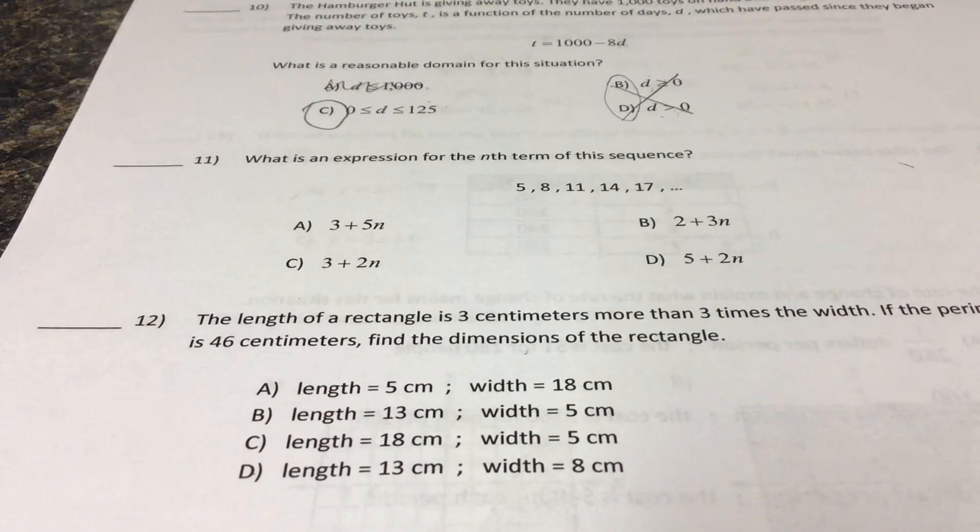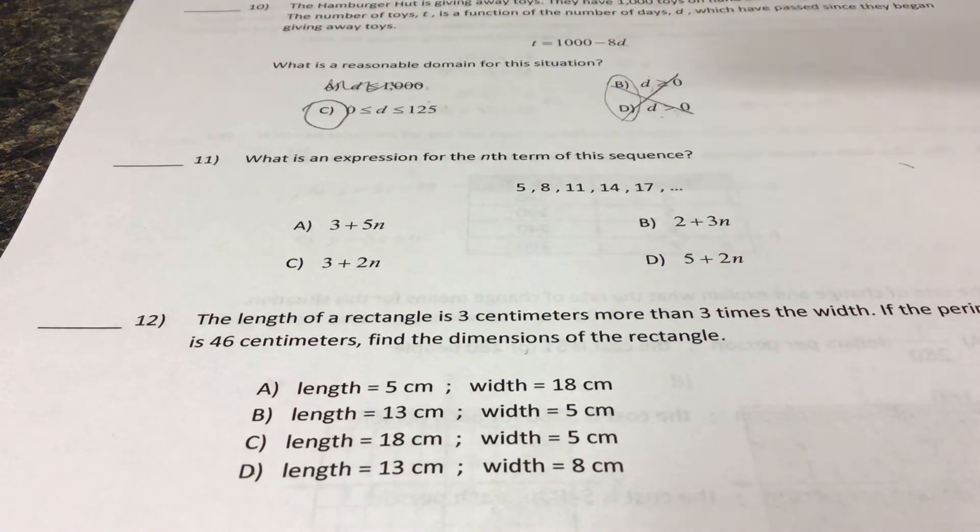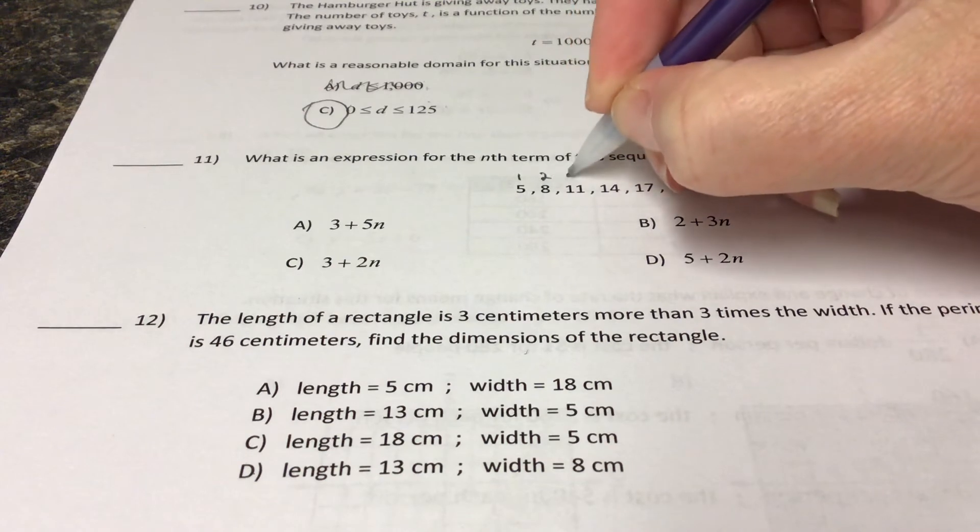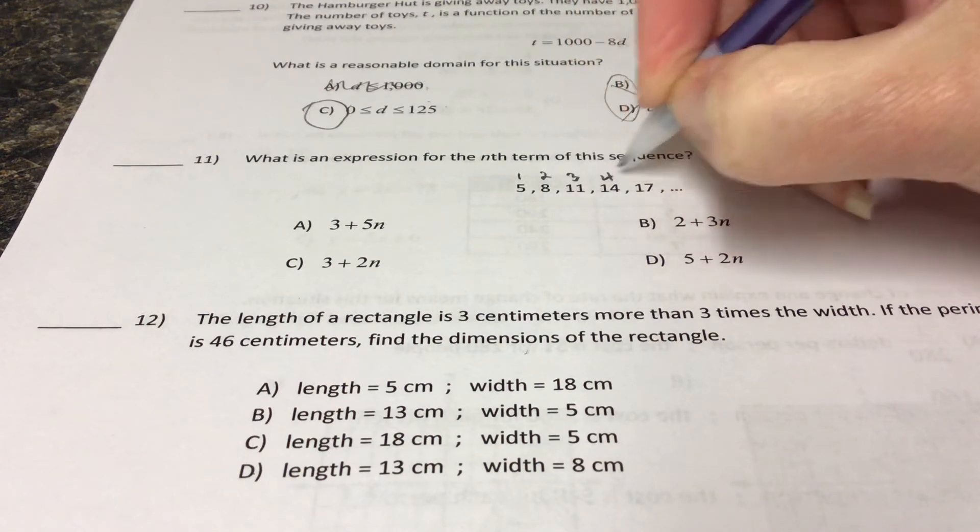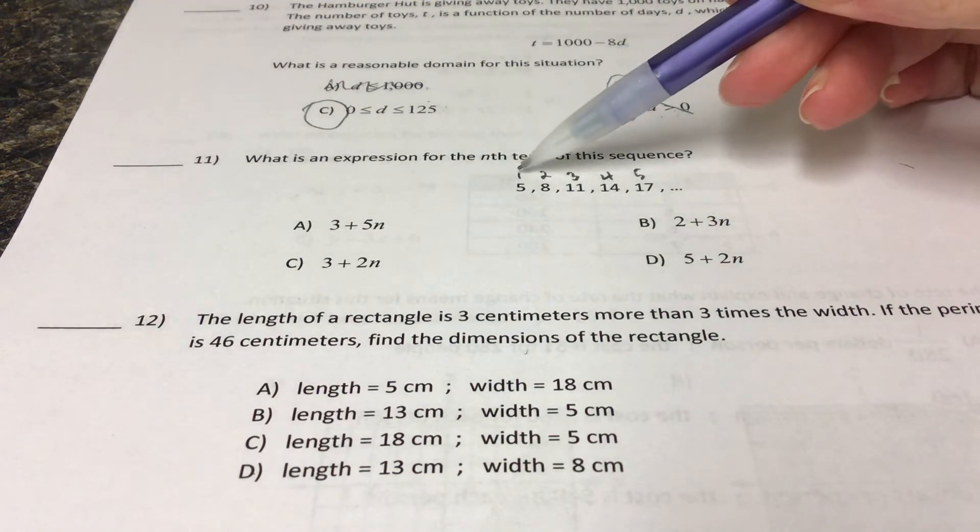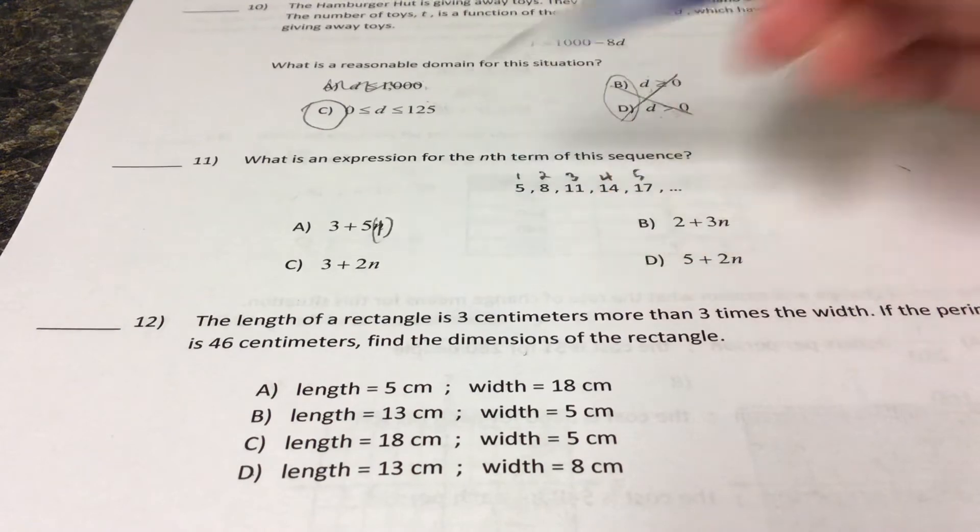We're going to work this one backwards. This says, what is the expression for the nth term of the sequence? There's an algebraic way to do this, but this is crunch time. So I want to show you a little workaround for this. If you take this term number one and put it into your choice here.